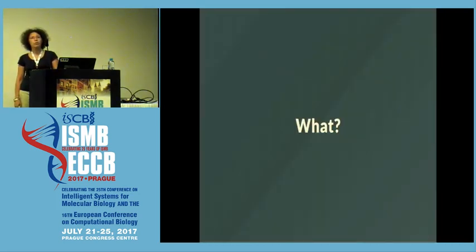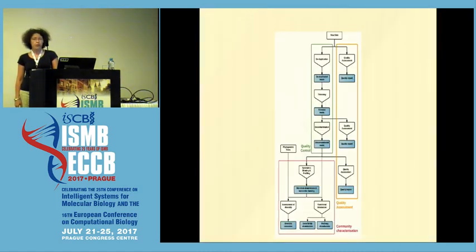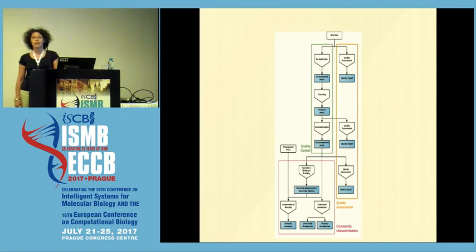So now we know why and how. Let's see what YAMP does. YAMP allows the processing of metagenomic data from raw reads all the way up to community characterization, and is divided into two main analysis blocks: the quality control and the community characterization.